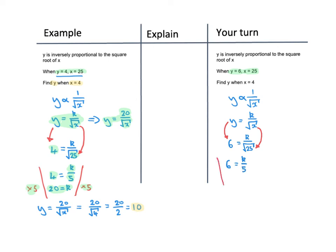We need to solve this to find K. At the moment K is being divided by 5, so the inverse of that is to multiply by 5. If we do that, we see that 30 is equal to K, or K is equal to 30. That allows us to rewrite this formula as Y equals 30 over the square root of X.